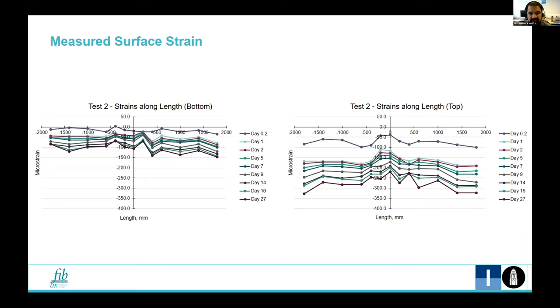Here we can see the strains measured on the wall surface and their development with time. These are the strains along the length. On the left side is the strain profiles along the length at the bottom of the wall or the lowest point in the wall. The right one is for the strains at the top level of the wall.